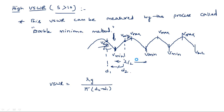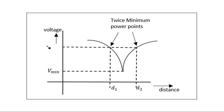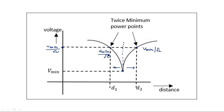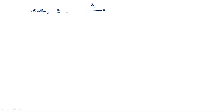d1 and d2 are the distances at successive minima or maxima. The guide wavelength λg appears in this formula, where λg is two times the breadth 'a' of the waveguide. We consider the dominant mode TE10, for which the cutoff wavelength λc = 2a, and λ0 = c/f.